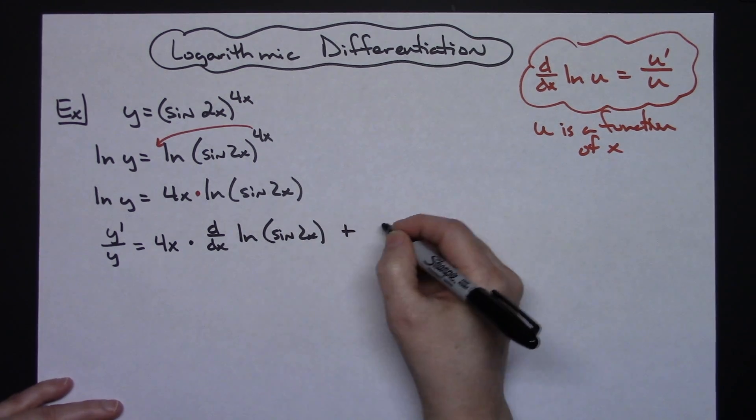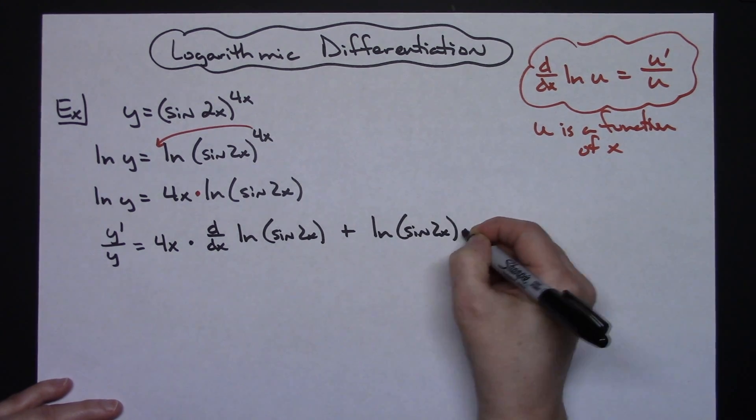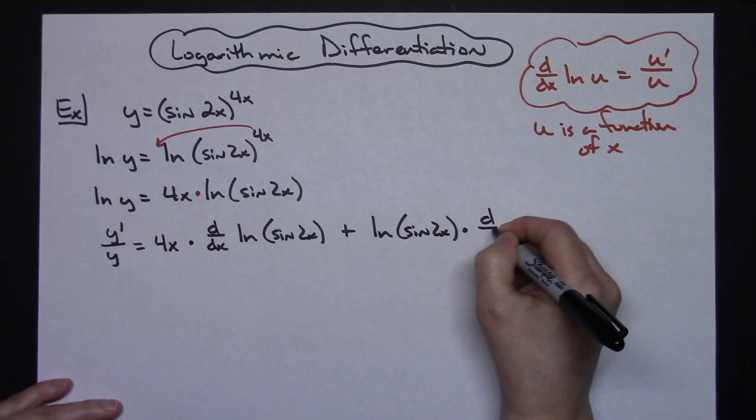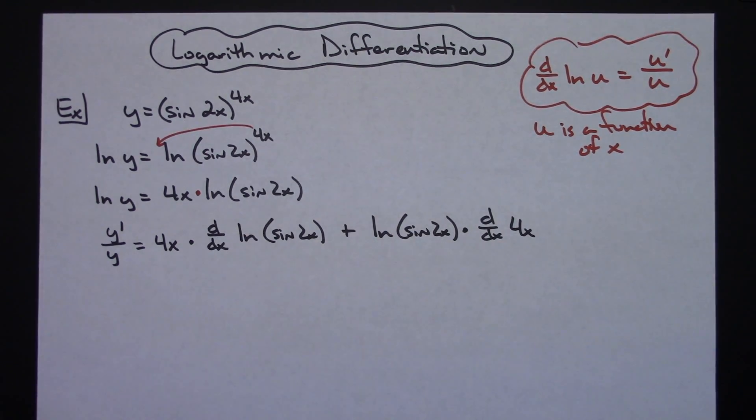And then plus the natural log of that sine 2x times the derivative, so d/dx of that 4x. Just doing that so you can clearly see that that's product rule there and how we're going to implement it.